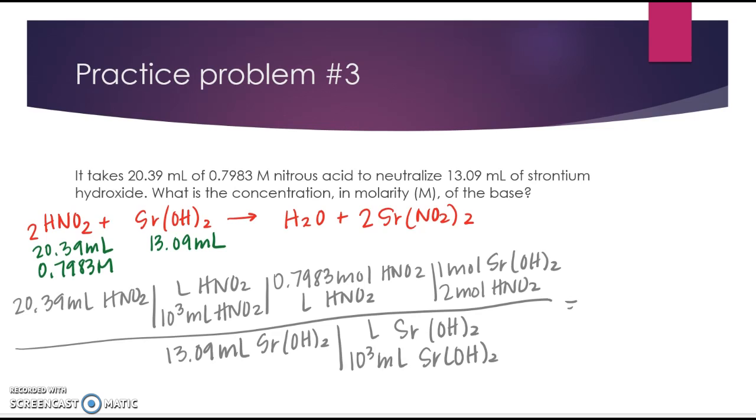So this is how your work should look. And again, remember the way that you check is that your units cancel top to bottom. And then now you just need to plug this into your calculator. And your answer should be rounded to four sig figs. Remember, two parts to your units. So make sure you have the Sr(OH)2 written with your final answer.